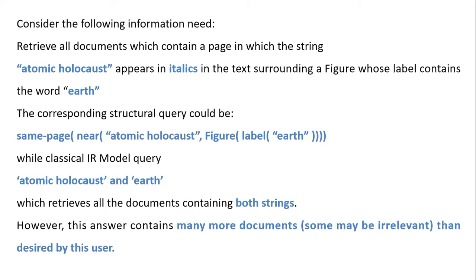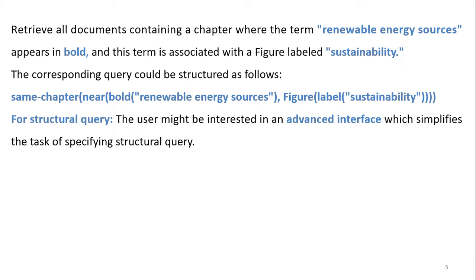The format for writing a structural query is different from classical IR. In the classical IR model, we could write 'atomic holocaust AND earth', which retrieves all documents containing both strings. However, this answer contains many more documents, and some may be irrelevant to what the user desired. A similar example: retrieve all documents containing a chapter where the term 'renewable energy sources' appears in bold and is associated with a figure labeled 'sustainability'.